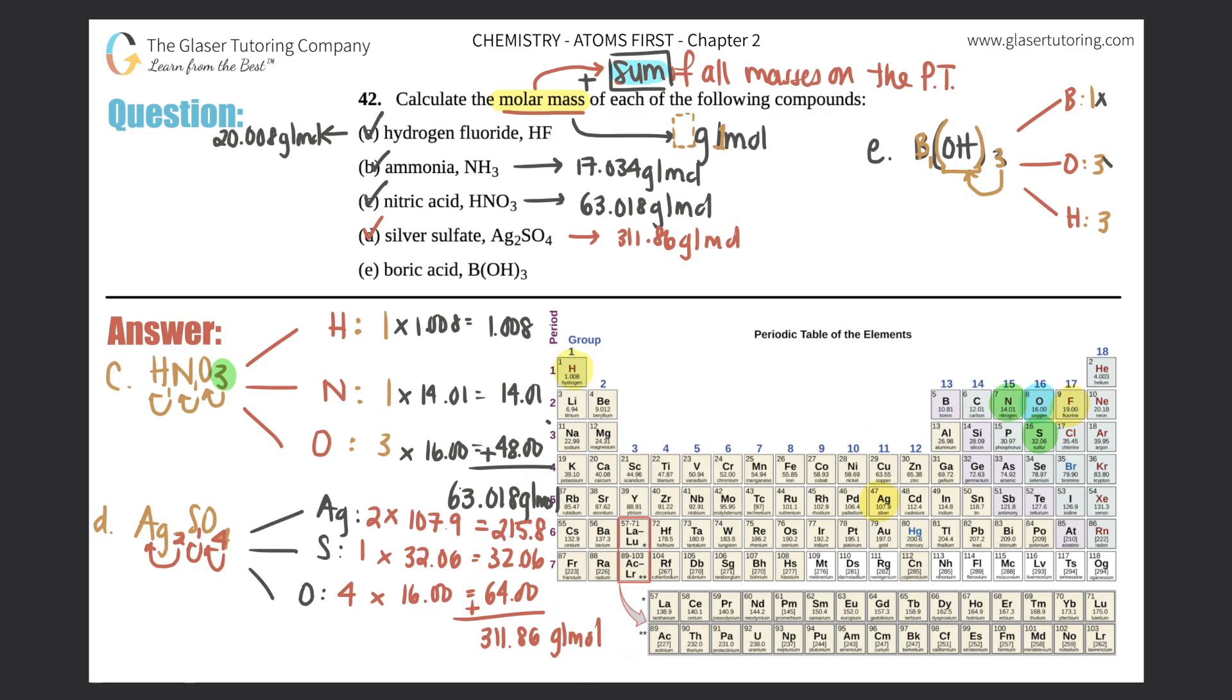Now we do the same thing as before - we times by what the mass is on the periodic table. We got to find boron. Boron is right here, 10.81, so one times 10.81 is just 10.81. Three times 16, we found that from before, so that's 48. Hydrogen we know from before is 1.008, so three times 1.008 is 3.024. Now we just have to add up all of these numbers. This would equal 10.81 plus 48 plus 3.024 - 61.834 grams per mole.